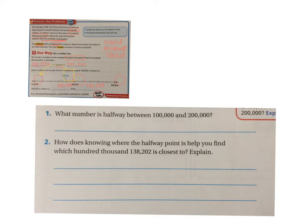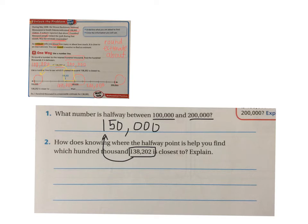Just to recap: we had to know that the number halfway in between 100,000 and 200,000 is 150,000. Knowing the halfway point helps us because we know that 138,202 is less than 150,000, so it is less than halfway, which means it's closer to the lower end — 100,000 — than to the upper end — 200,000. Pause the video and explain in your own words how knowing the halfway point helped us find which hundred thousand 138,202 is closest to, and fill in your answer for question number two.